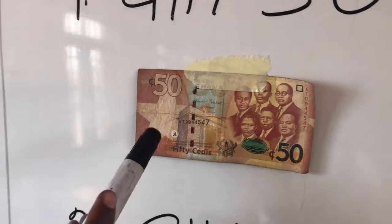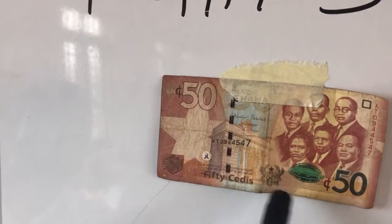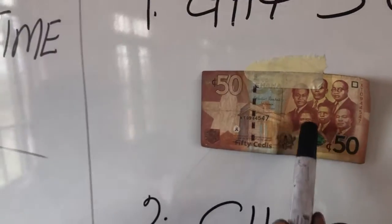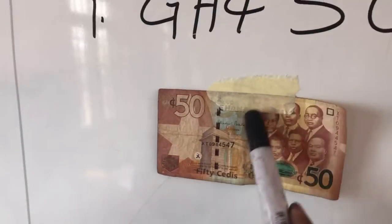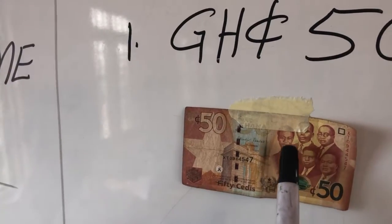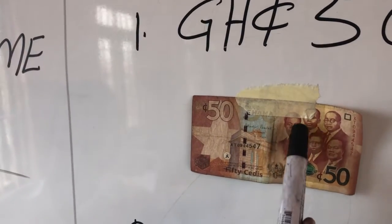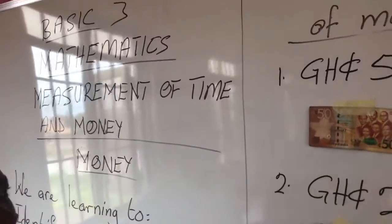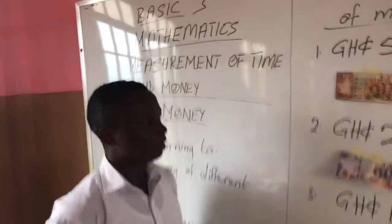I will be giving you an assignment to do at home. You'll be telling your parents, your brothers, and sisters. Look at this group of people on the note - ask your parents their names. I want them to tell you the names of these six people. Who are they? Why are they on the Ghana cedi currency?